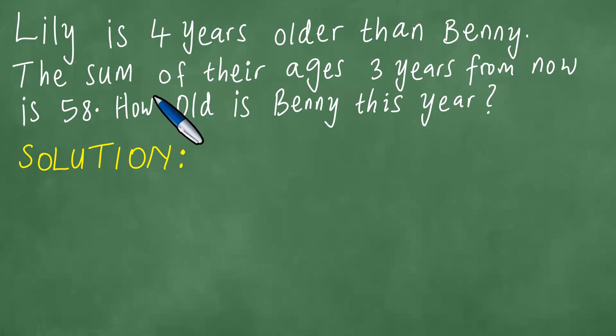Write. Lily is four years older than Bernie. The sum of their ages three years from now is 58. How old is Bernie this year?